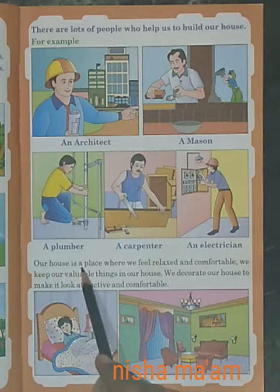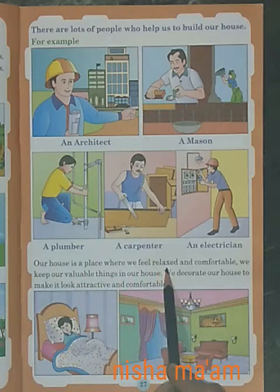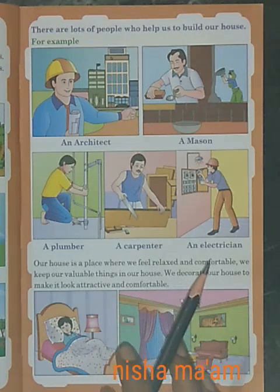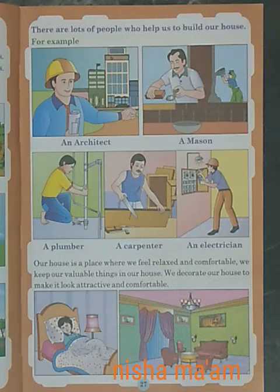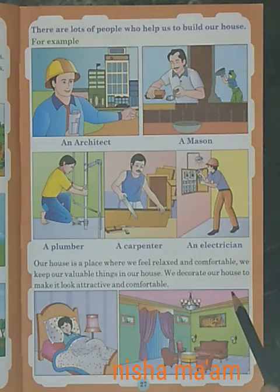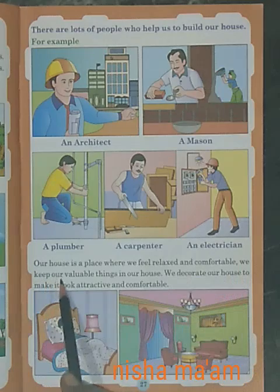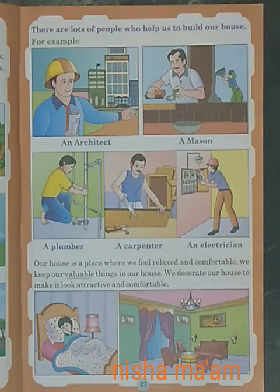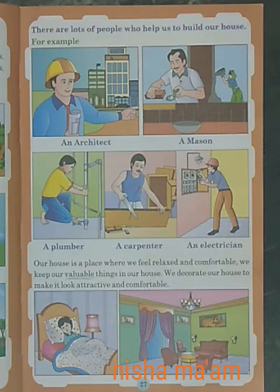Our house is a place where we feel relaxed and comfortable. हम कहीं से भी घूम के आते हैं, लेकिन जब घर में बेड पर सोते हैं तो comfortable feel होता है। We keep our valuable things in our house — हम हमारे घर में कीमती चीज़ें रखते हैं, जैसे के मम्मी की bangles, chain, earrings, gold की चीज़ें, TV, fridge, पैसे।